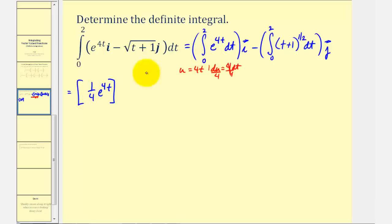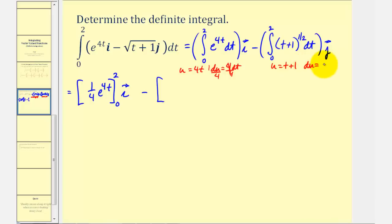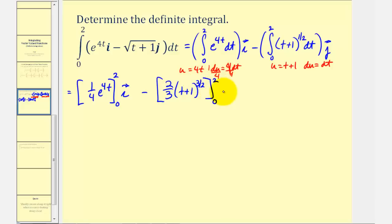Remember, this is definite integration, so we have our limits of integration from zero to two, times i, and then minus. This may appear to require u-substitution, but notice the inner function is u equals t plus one, therefore differential u is dt. So we can use the basic power rule here — we'll add one to the exponent and divide by that new exponent. One-half plus one is three-halves, and instead of dividing by three-halves we'll multiply by the reciprocal, giving us two-thirds times the quantity t plus one to the three-halves power, from zero to two, times j.